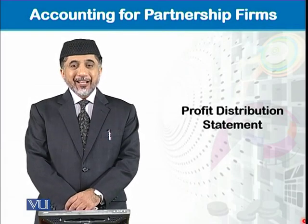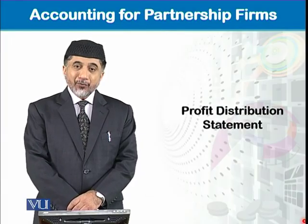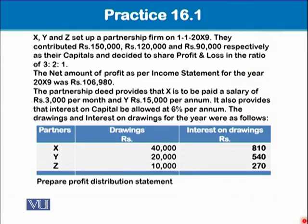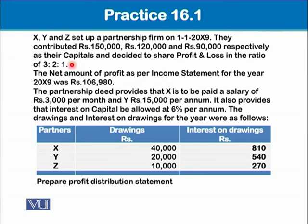In this module we will discuss the profit distribution statement for a partnership firm. In this practice question, there are three partners X, Y, and Z who set up a partnership firm on 1st of January X9. They contributed 150,000, 120,000, and 90,000 respectively as their capital, and decided to share profit and loss in the ratio of 3 to 1. The net profit as per the income statement for year 200X9 is 106,980.